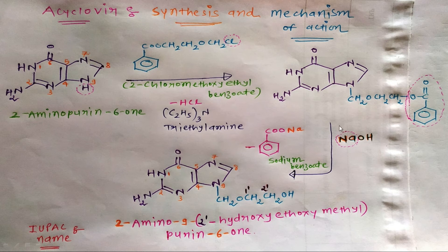Now this compound will be treated with sodium hydroxide for alkaline hydrolysis. The benzoate portion will be released as sodium benzoate, and this compound will be converted into acyclovir. The ester will be cleaved and hydroxy will be substituted, giving CH2-CH2-OH. That is the structure of acyclovir.